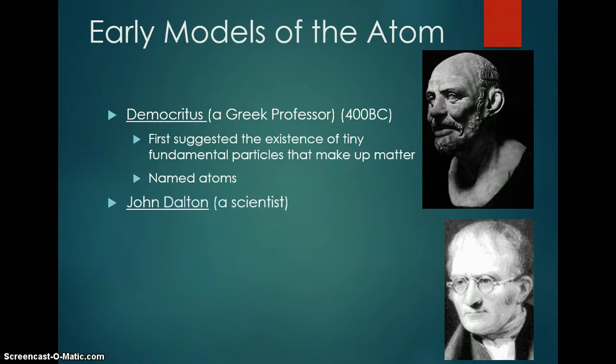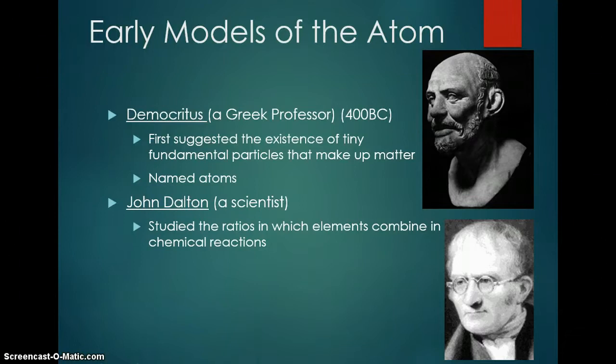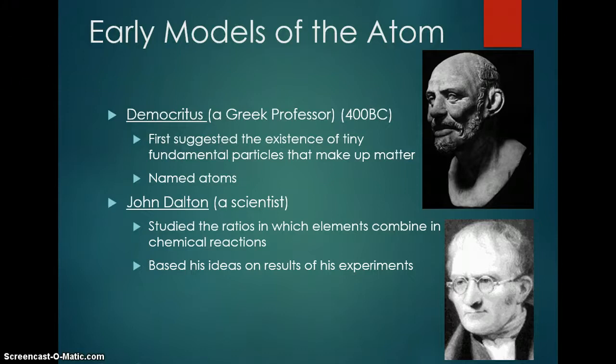Much later, a scientist named John Dalton came along and he did experiments. He studied the ratios in which elements combine in chemical reactions. He looked to see how much hydrogen combined with how much oxygen to make water.